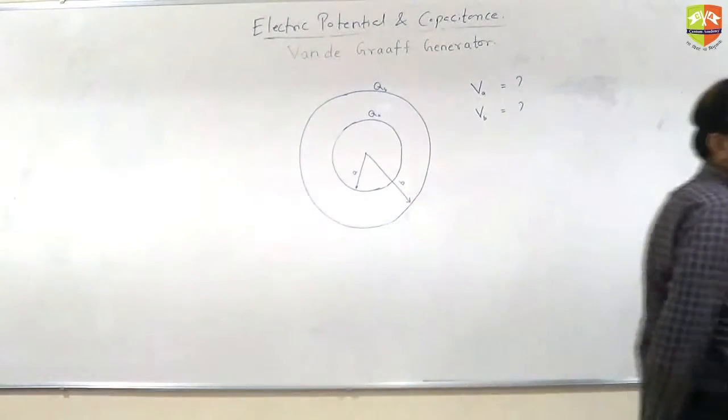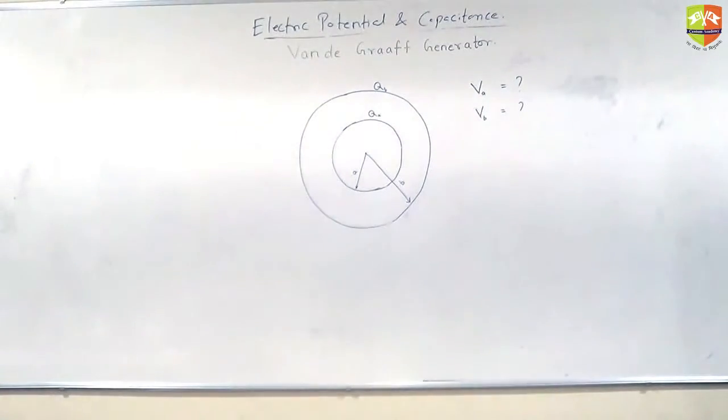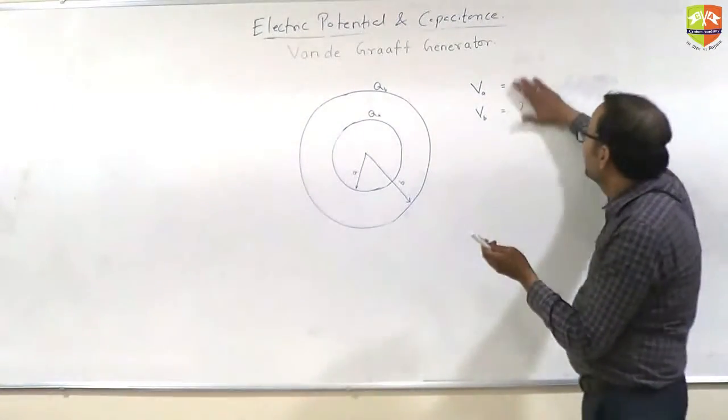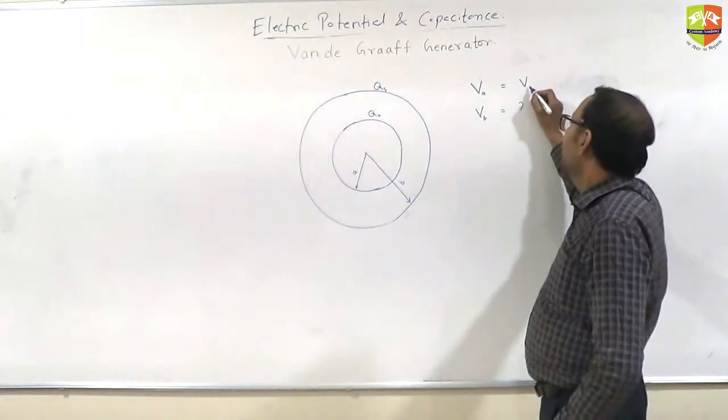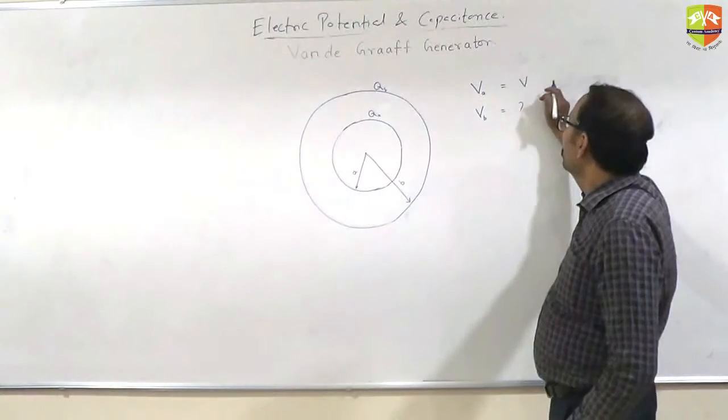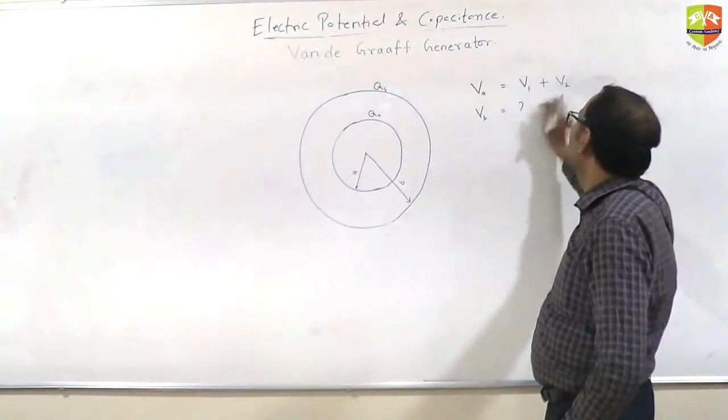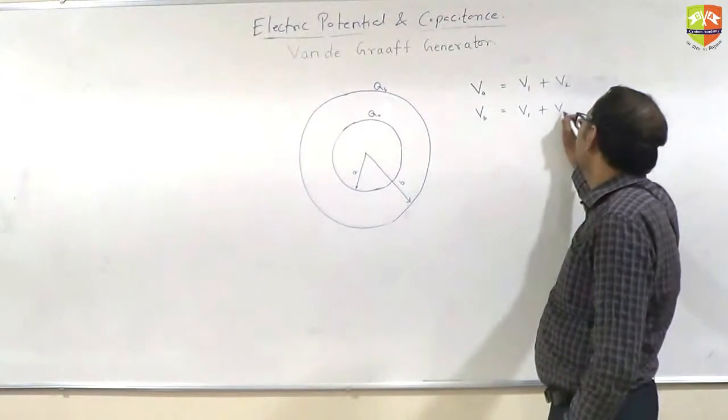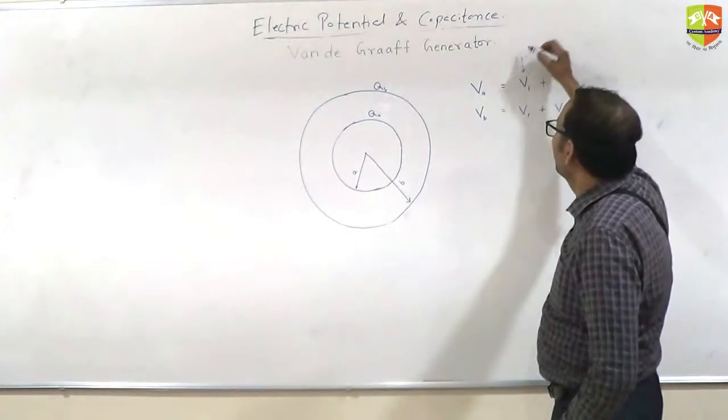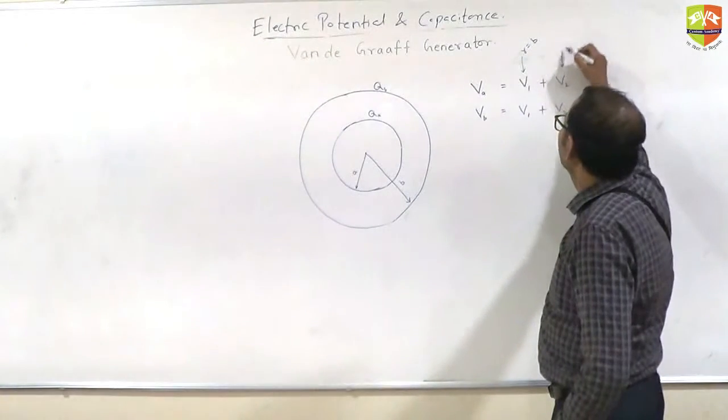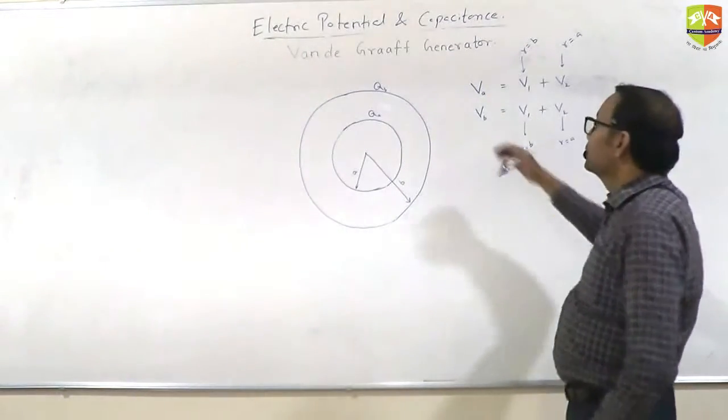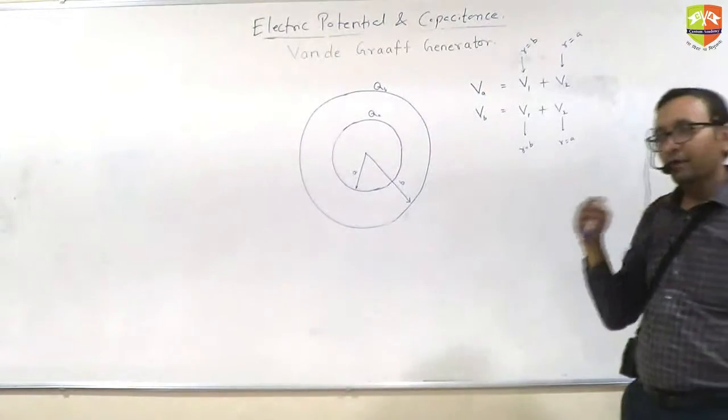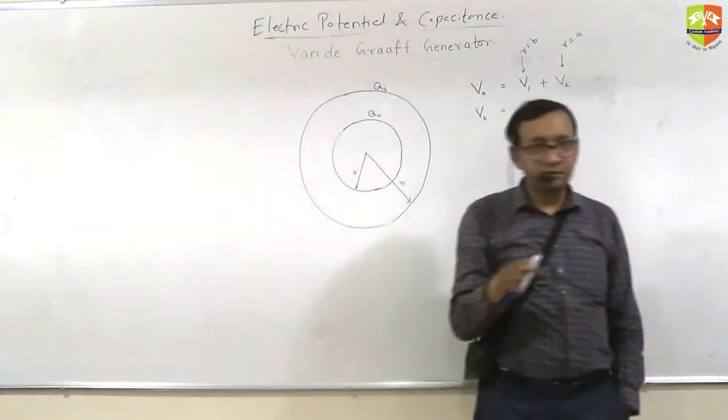We have spheres shells, not solid spheres. So VA should be potential due to the charge at that radius. Yes. V1 plus V2. We have V1 plus V2. This is because of R equal to B and this is because of R equal to A. Both inner and outer sphere, they will get the potential due to both these spheres. Are you getting it? Yes.